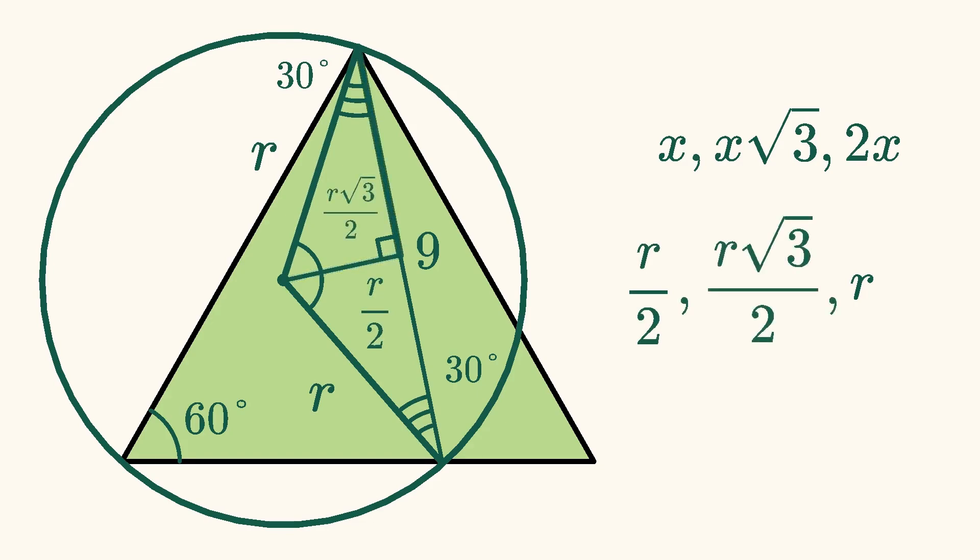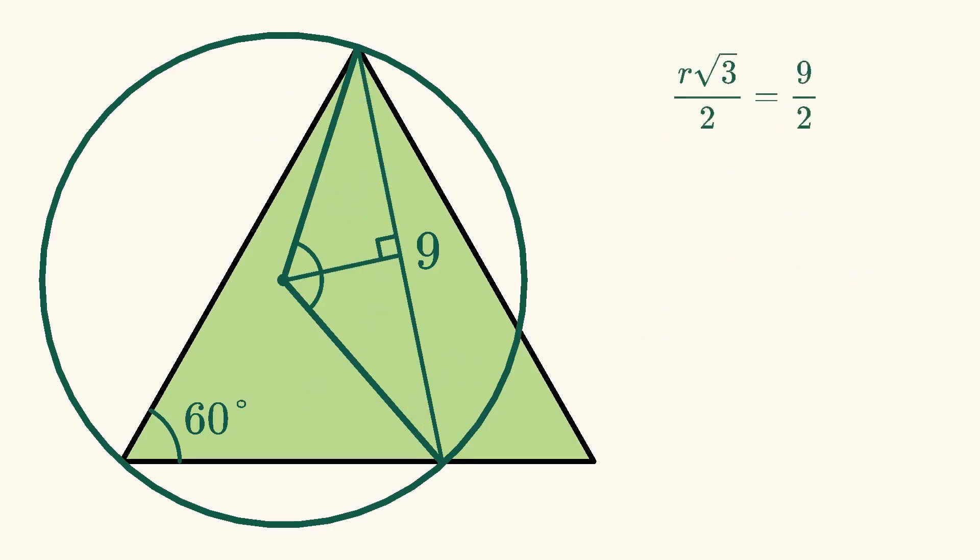The most important ones for our problem are the ones with length r square root of 3 over 2. Each of these sides forms half the chord whose total length is 9. When we write this as an equation and solve it, we find that r is equal to 9 over the square root of 3.